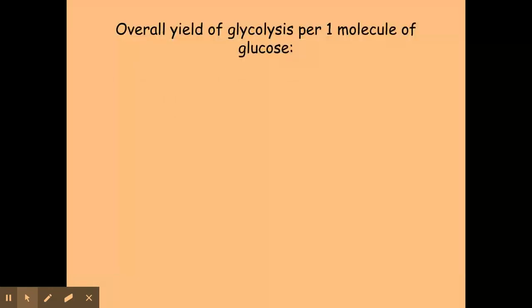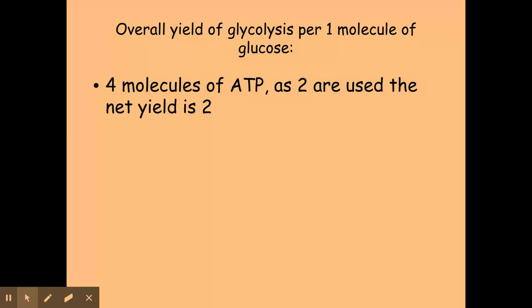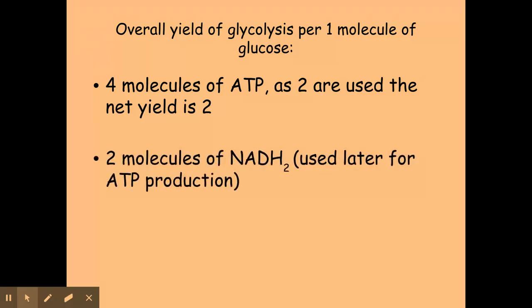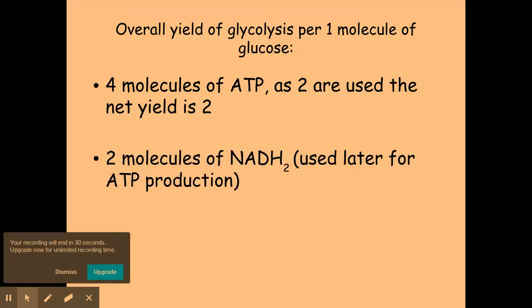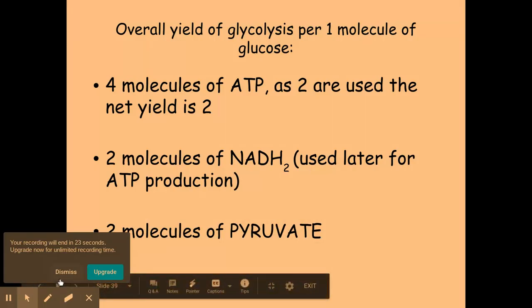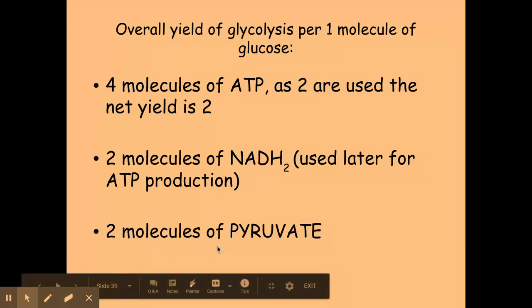Okay, so the overall yield per one molecule of glucose: I've got four molecules of ATP that have been made, but because two have been used, the net yield of ATP is two. You need to go back and look at that diagram as well. Again, I've got two molecules of NADH2 or reduced NAD. Don't forget, two molecules per one molecule of glucose. I've also got two molecules of pyruvate, and these are used later on within the reaction for respiration.